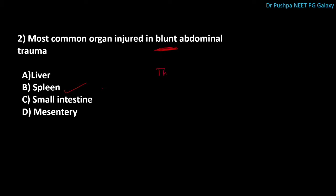Related facts: the most common organ injured in penetrating abdominal injuries is the liver. The most common organ injured in gunshot wounds is the small intestine. The most common organ injured in seat belt injuries is the mesentery. So to summarize, the most common organ injured in blunt abdominal trauma is the spleen.